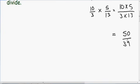So now we have a final answer of 50 over 39. But since we divided two mixed numbers, our final answer also has to be a mixed number. So we can change 50 over 39 into a mixed number by using long division.